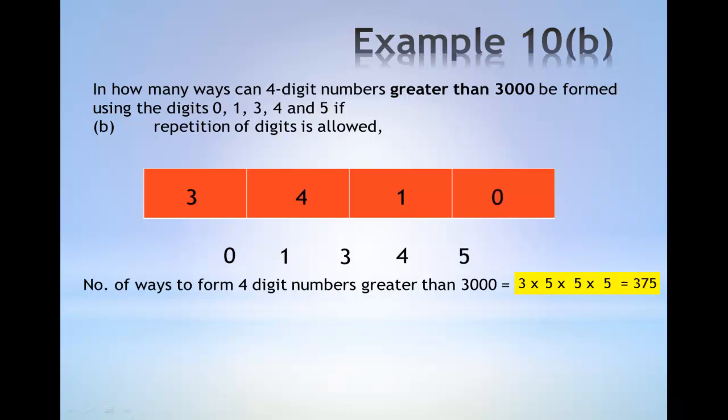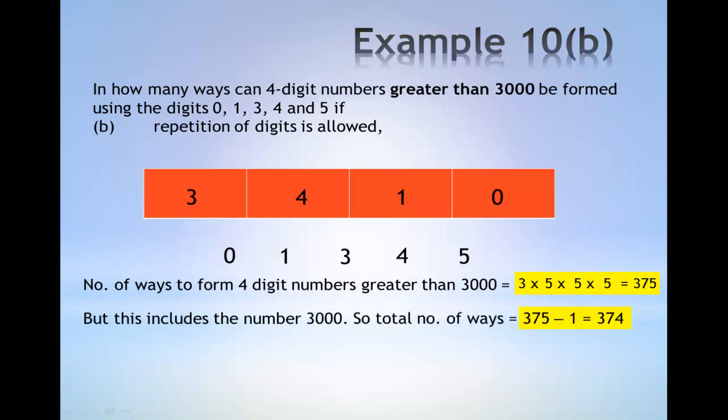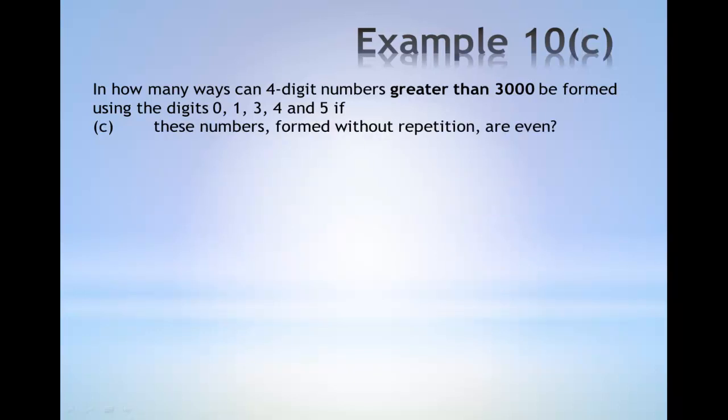In this case we have 375. But note that this includes the number 3000 among the 375 different numbers. So to take this away, the total number of ways greater than 3000 is 375 minus 1, which gives 374.